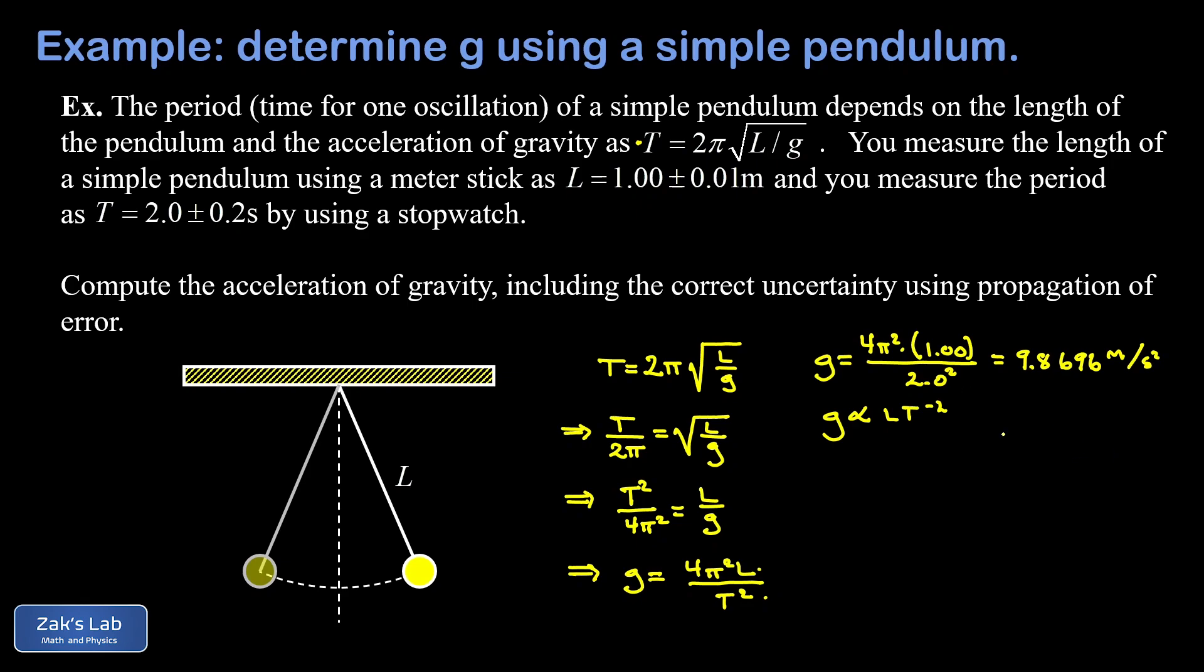We have an error propagation formula for this case where our calculated value is proportional to the product of two different measured variables raised to different exponents. I'm going to put a 1 as an exponent on the L just to emphasize that that has an exponent too.